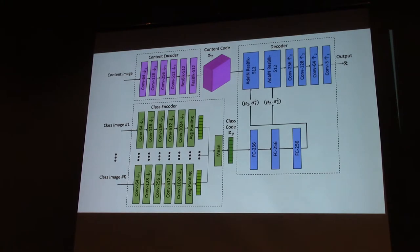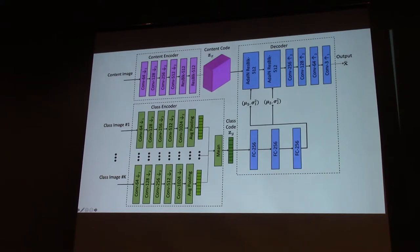This is the network we use to achieve this task. It has a content encoder, which consists of convolution filters and residual blocks. There's another module called the class encoder, which is more like a VGG-like network. It operates on a set of images rather than a single image. And then you have a decoder.